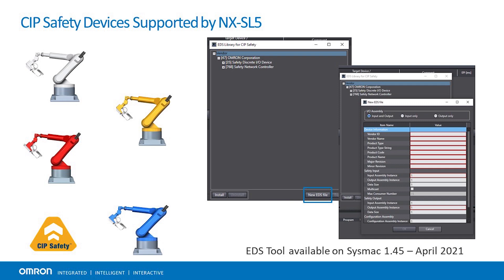Omron has developed a new EDS tool that will be integrated into SysMac Studio starting with version 1.45. This tool can be used to quickly and easily create the EDS file for third-party SIP safety devices so they can be added to the network. This new tool is scheduled to be released in April 2021.